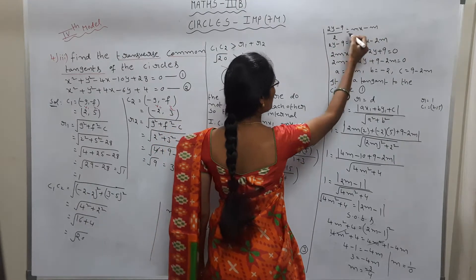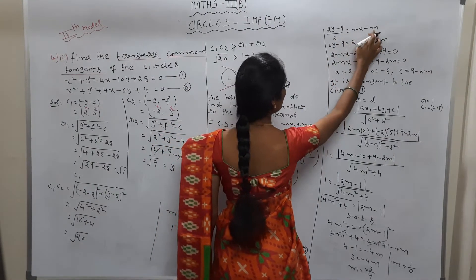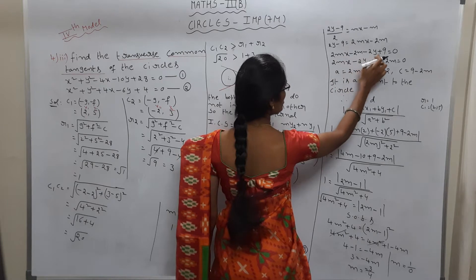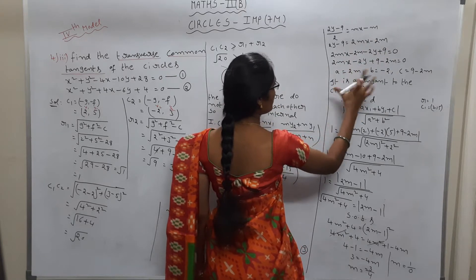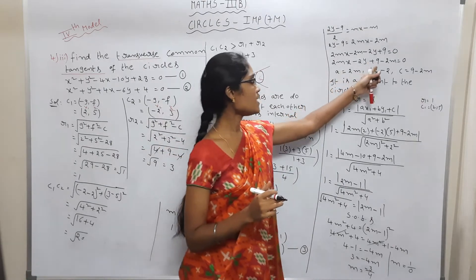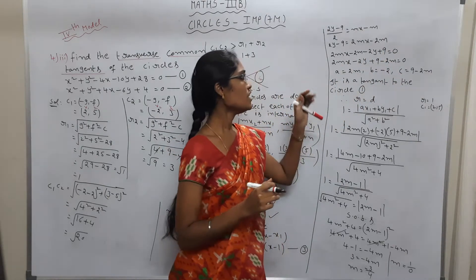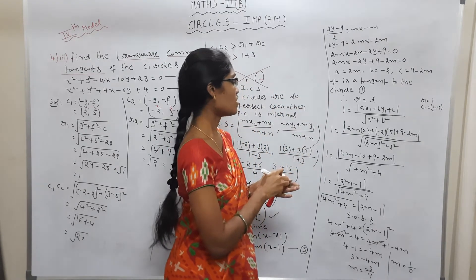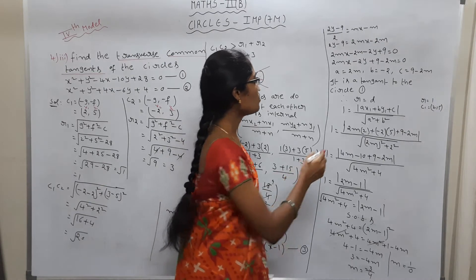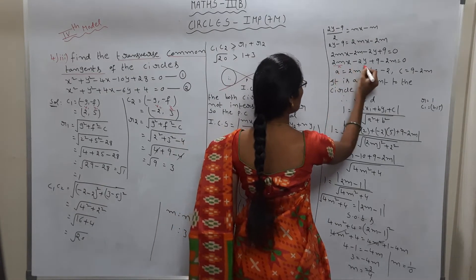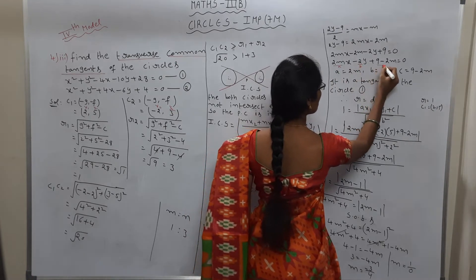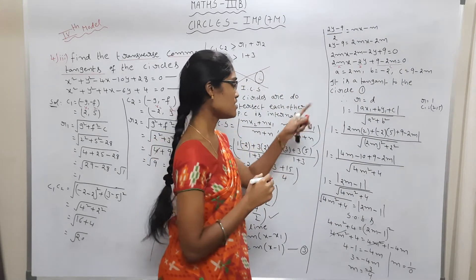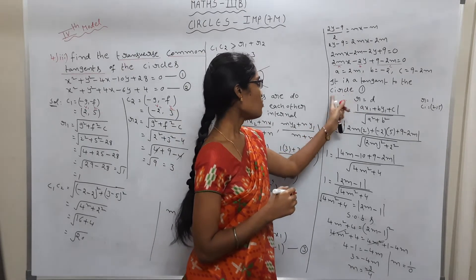Continuing simplification: 2mx − 2m − 2y + 9 = 0. Writing in order: 2mx − 2y + (9 − 2m) = 0. This is in the form Ax + By + C = 0. Comparing: A = 2m, B = −2, C = 9 − 2m.